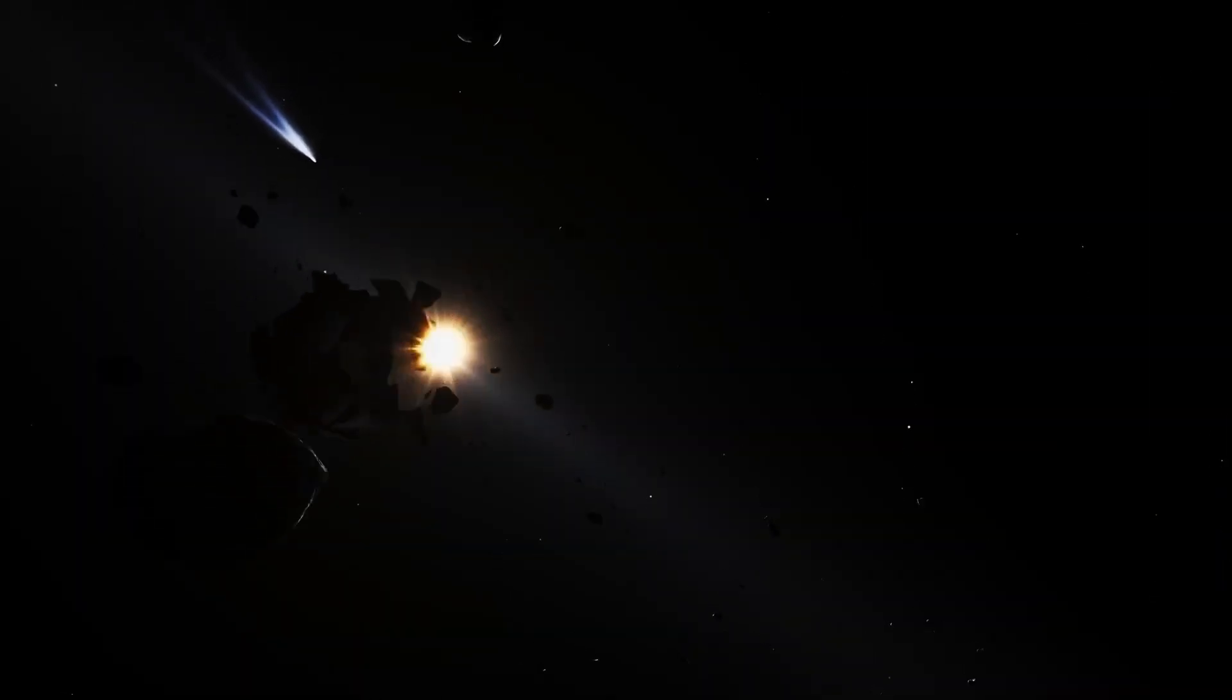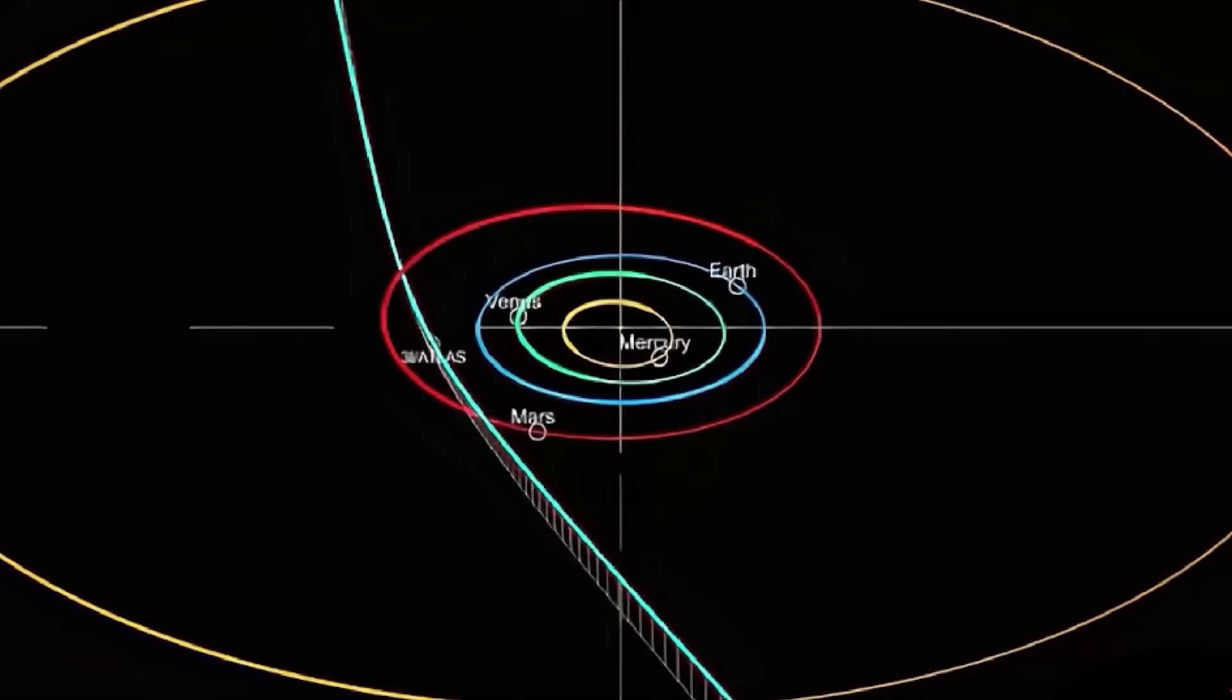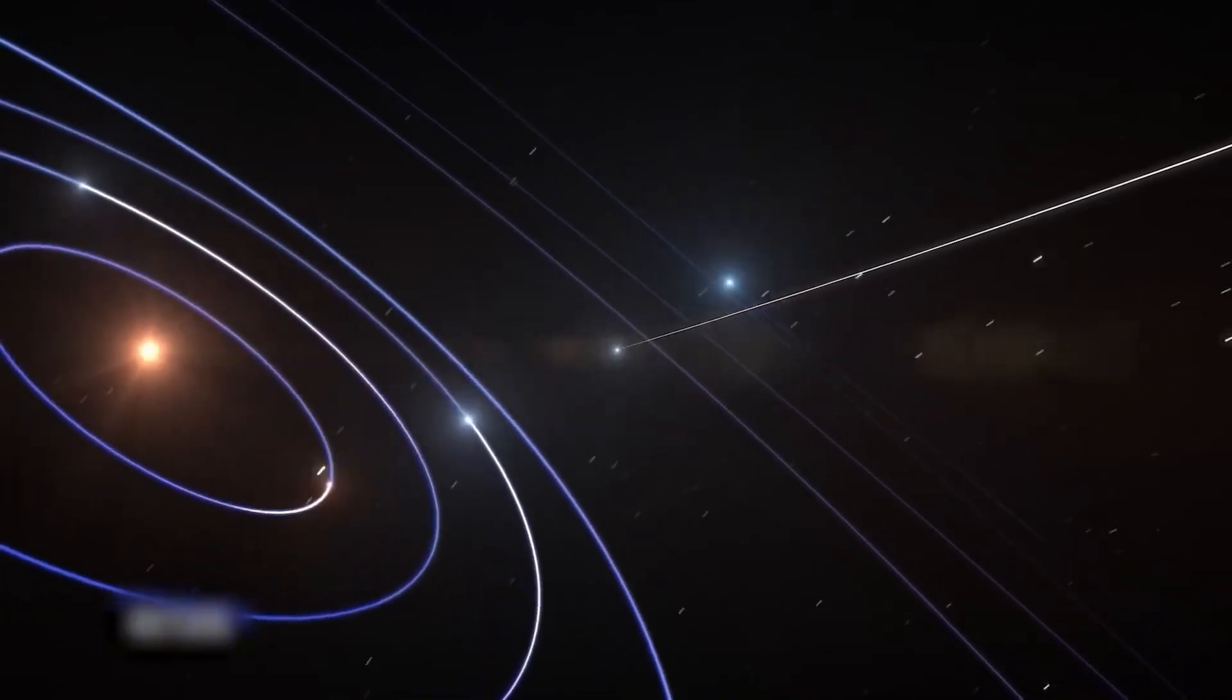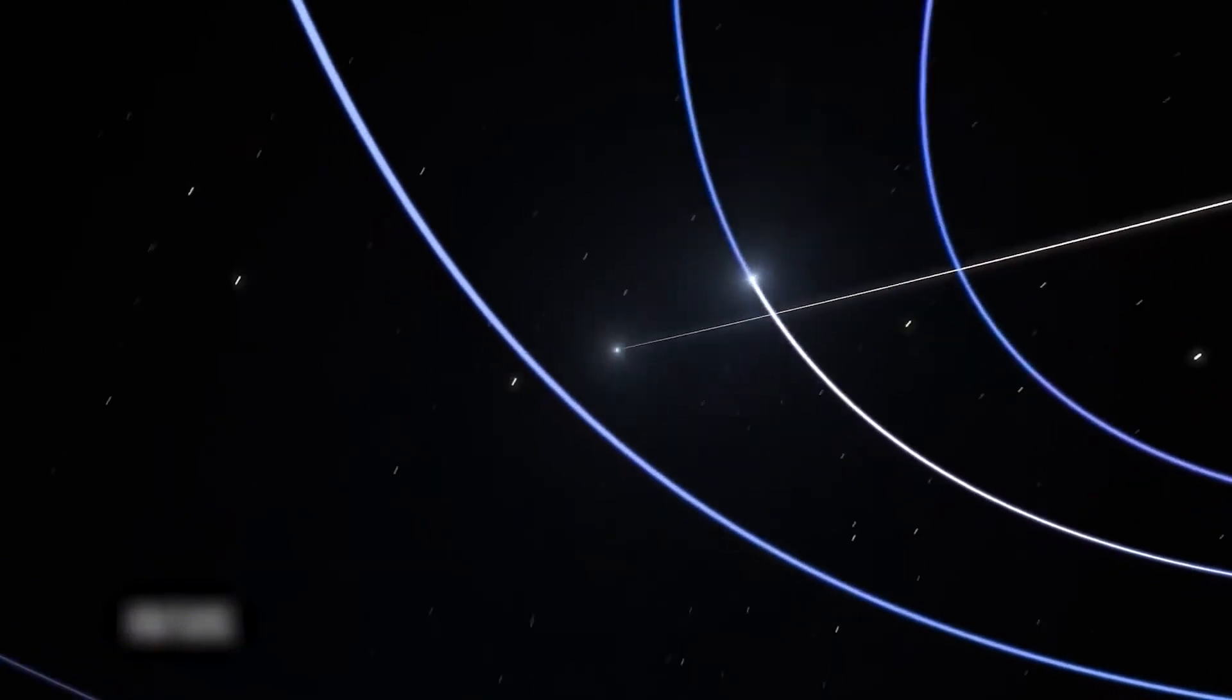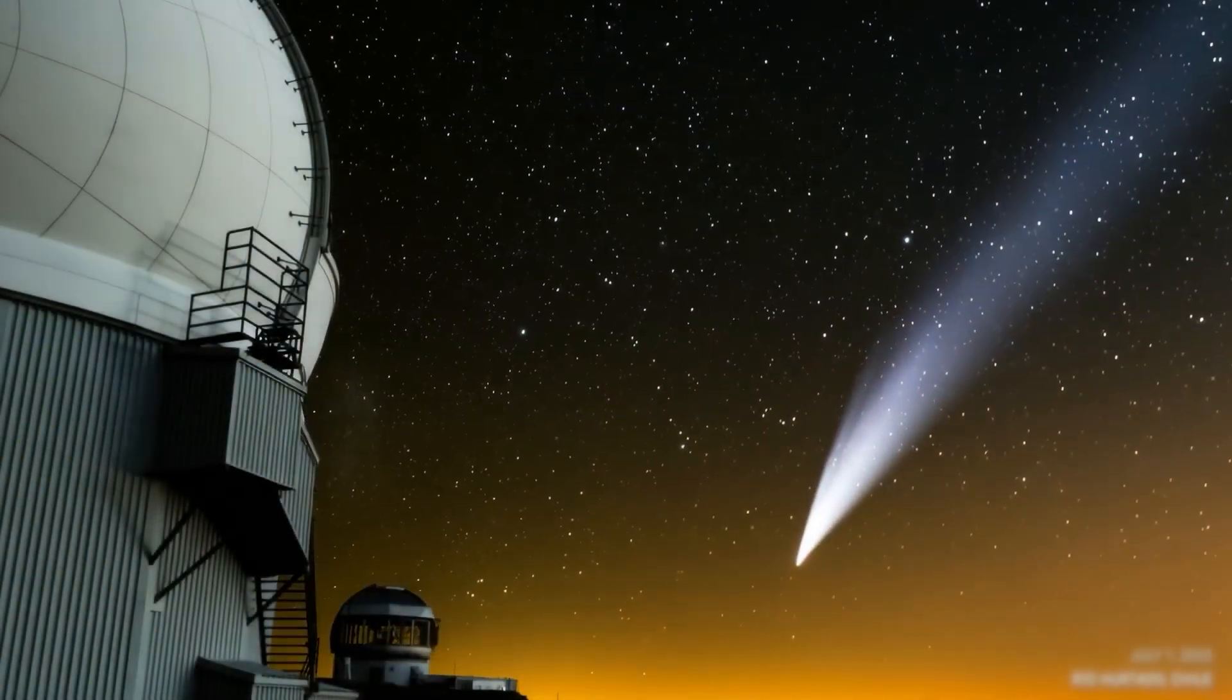The trajectory of this object follows a path remarkably close to our solar system's orbital plane. While not impossible, it's statistically unusual for interstellar visitors. So what do you think could explain these anomalies?